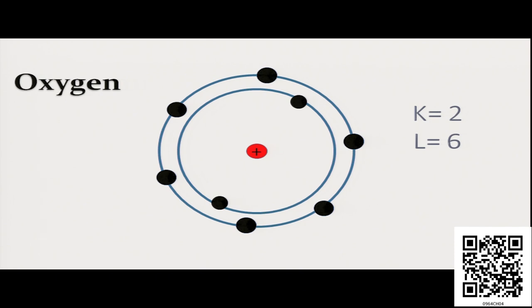So oxygen's valency is also 2 but it is negative. Unlike magnesium, whose valency is 2 but we call it a positive valency because magnesium can lose 2 electrons whereas oxygen can gain 2 electrons.